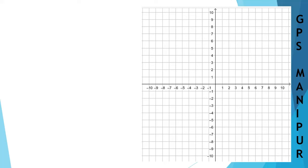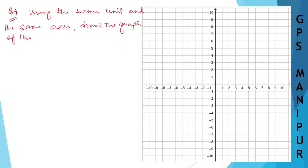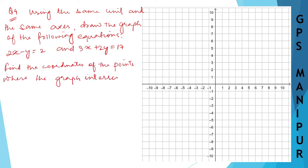Let me do exercise 4.2, question number 4. The question says: using the same unit and the same axis, draw the graph of the following equations — 2x minus y is equal to 2, and 3x plus 2y is equal to 17. Find the coordinates of the point where the graphs intersect.